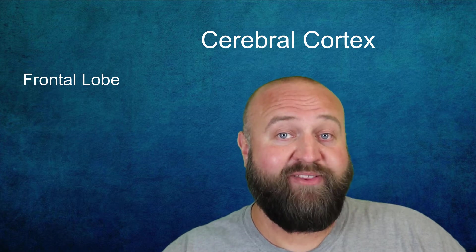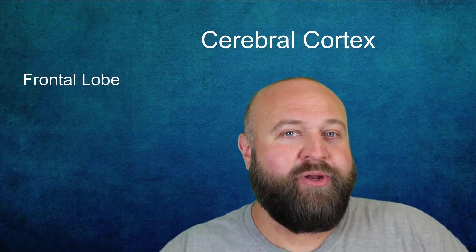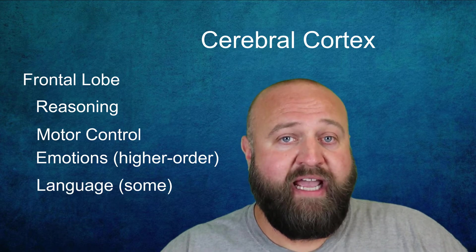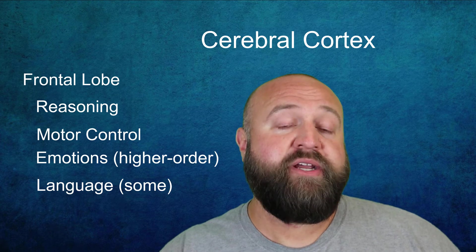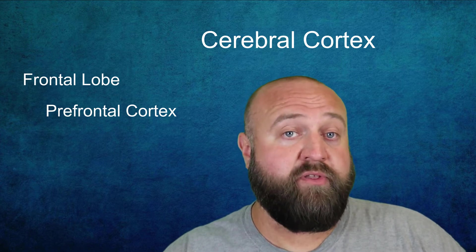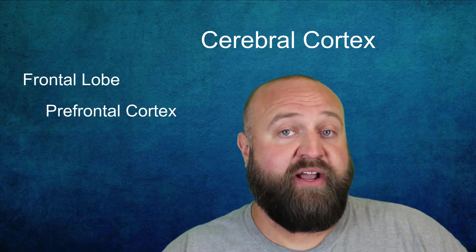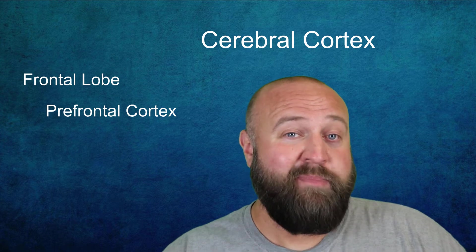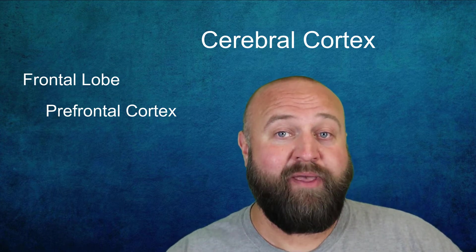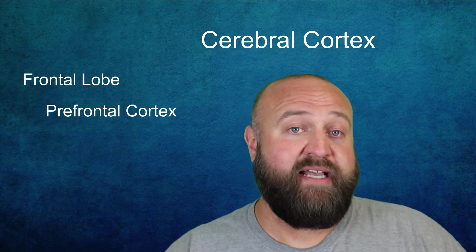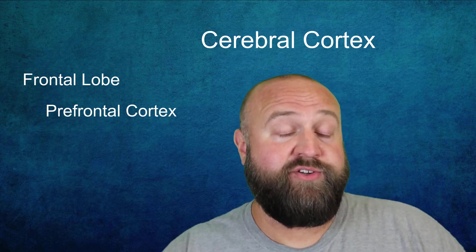The frontal lobe is located at the front of the cerebral cortex. It plays a role in reasoning, motor control, higher-order emotions, and some aspects of language. All the way at the front of the frontal lobe, just behind the forehead, is the prefrontal cortex. This is the most advanced, humanistic part of our brain and is responsible for higher-level cognitive functioning. It plays a role in abstract thinking, planning, hypothetical reasoning, and other advanced cognitive functions. The prefrontal cortex is actually the last part of your brain to fully mature, and many people are surprised to hear that this doesn't completely happen until roughly the mid to late 20s. This is one of the reasons why some adolescents and younger adults may engage in more reckless behaviors than older adults.